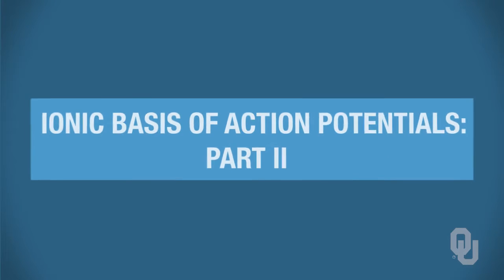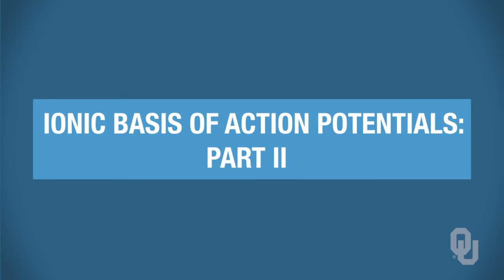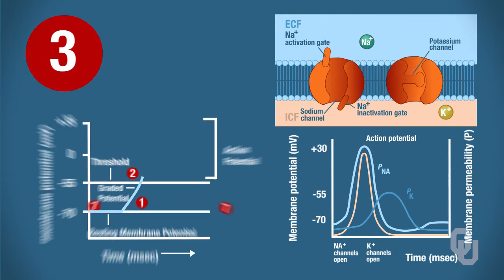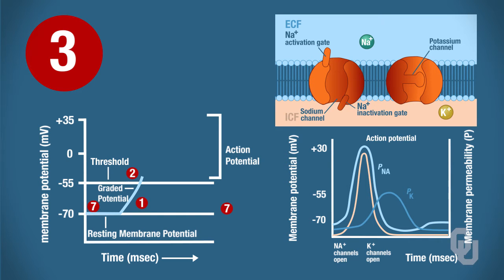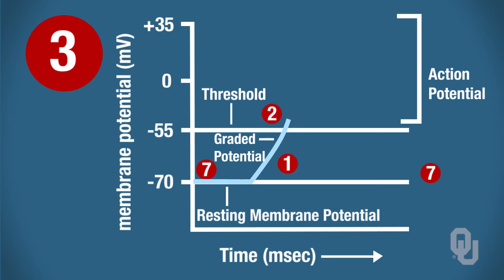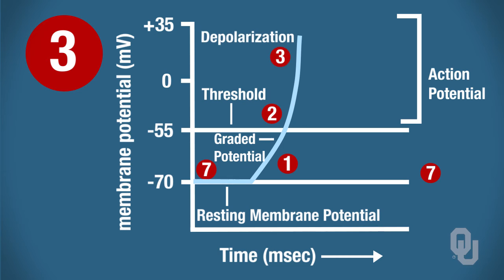This is part two of two lecture notes for the ionic basis of action potentials. We are going to begin with the rapid depolarization phase of the action potential, assuming that threshold has been reached. We had an excitatory postsynaptic potential which brought the membrane potential to negative 55 millivolts, which generated an action potential at the axon hillock.